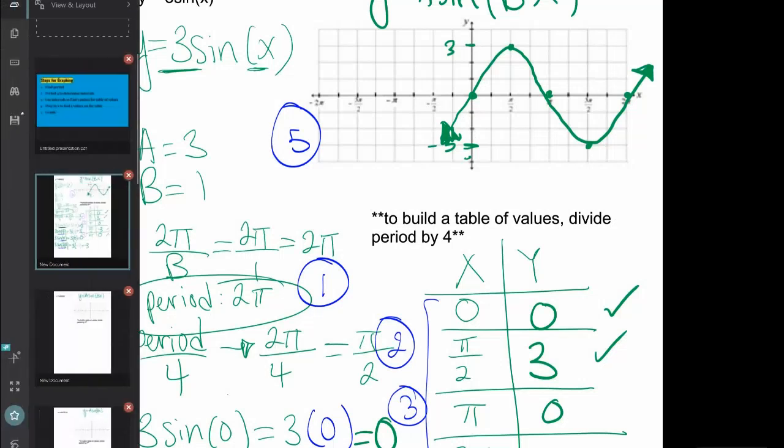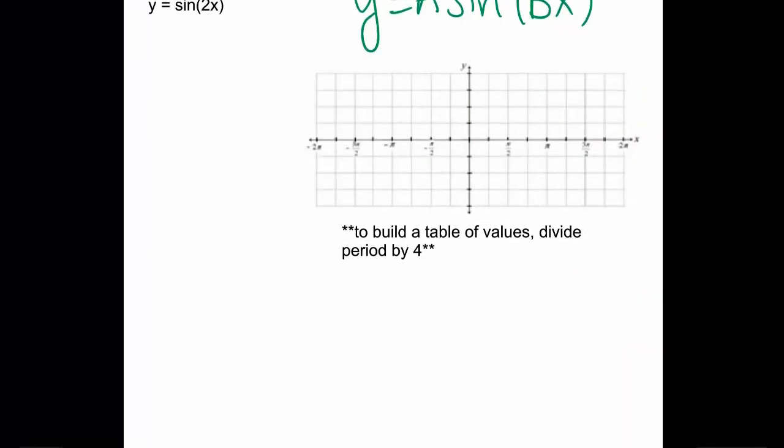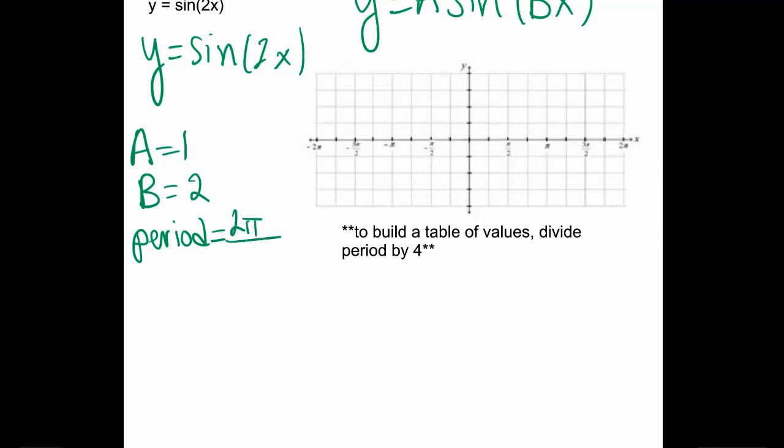Let's try one more example. The next example is y equals sine 2x. So this one will change our period a little bit, right? You should already see that there is no a, so your amplitude will just go back to its default, which is 1. However, your b, the number that x is multiplied by, is 2. So you have to figure out first what your period is before you can find your intervals. So your period is 2π over b, meaning that your period is 2π over 2. Therefore, your whole period, meaning one whole cycle, is π.